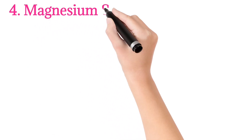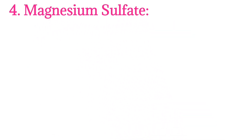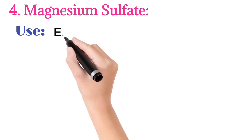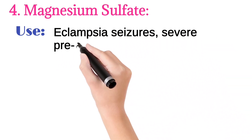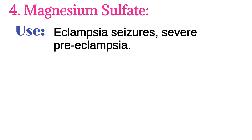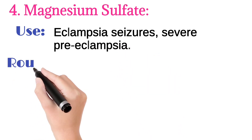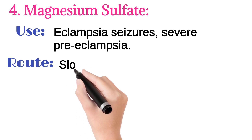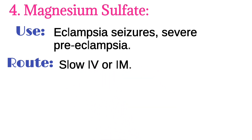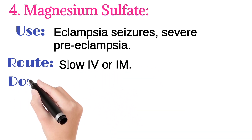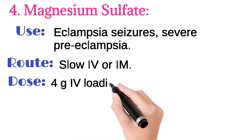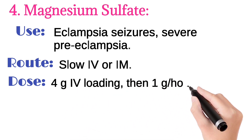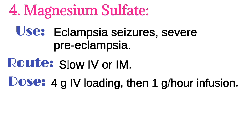The fourth one is magnesium sulfate. It is used in eclampsia seizures and severe pre-eclampsia. It is injected intravenously or intramuscularly. Its usual dose for adults is 4 g intravenously as a loading dose, then 1 g per hour infusion.